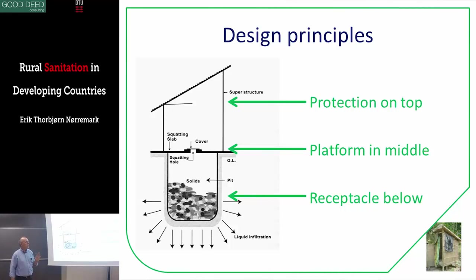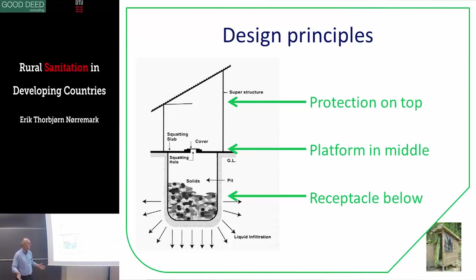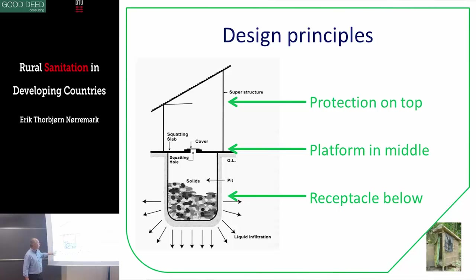In latrines, we have three parts. The top is a superstructure providing protection, privacy, or shade depending on the model. We have a platform — that's the floor — so you don't fall into the hole. And at the bottom is the receptacle; I don't say hole because sometimes you might build a box. The person sits up top, liquids infiltrate downward, and the solids decompose over time.